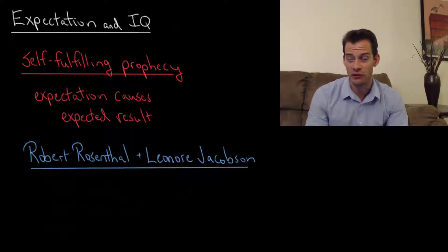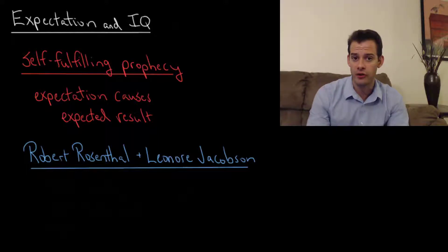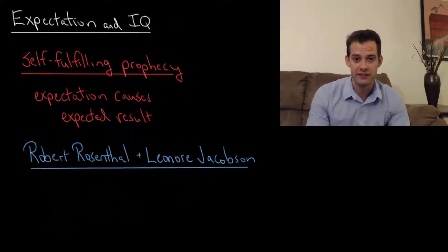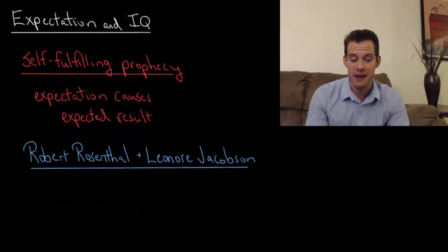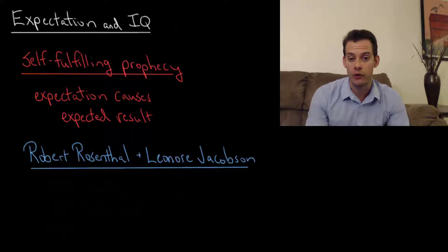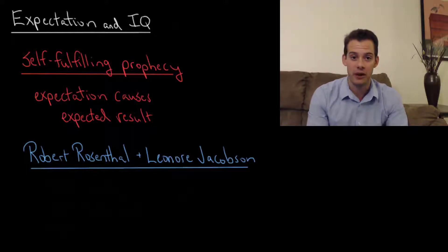We saw an example of this in the unit on research methods in a study by Robert Rosenthal and Kermit Fode, in which college students were given rats to run in mazes. The students were told that some rats were maze bright and some were maze dull. After running the rats, students found that the bright rats outperformed the dull rats — except the rats were actually randomly distributed. There were no bright or dull rats, so the difference in performance was likely due to differing expectations.